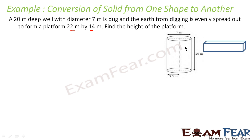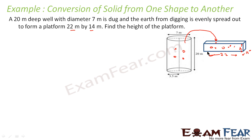Whatever material, whatever soil we got from there, is used to create this platform, and this platform is in the form of a cuboid where 22 meters is the length and 14 meters is the width. We have to find the height of the platform. All the solid material got from here is used to fill this platform. The volume of the well is equal to the volume of the platform, because volume of the well is nothing but volume of earth dug out, and the volume of earth dug out equals the volume of the platform.